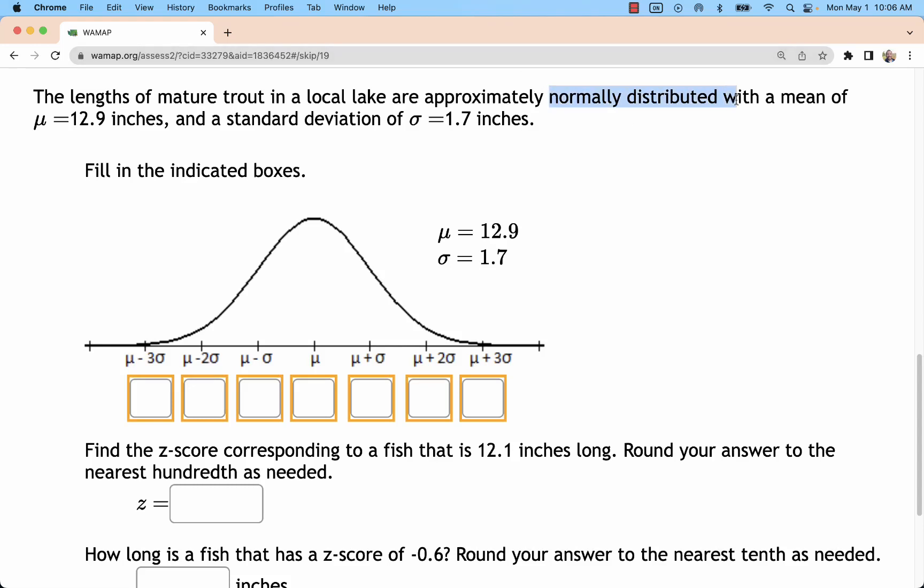In this problem we have a normally distributed variable and what we want to do is label the x-axis underneath this normal curve. The standard approach is to put the mean in the center and then label tick marks that go one, two, and three standard deviations to the left and right.